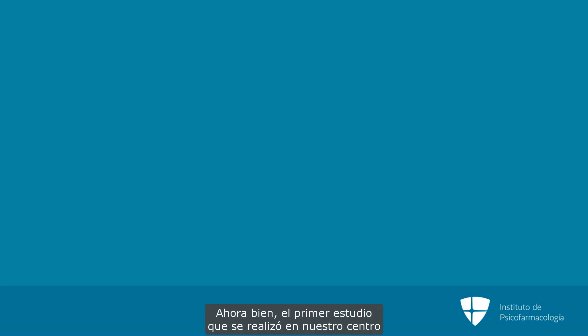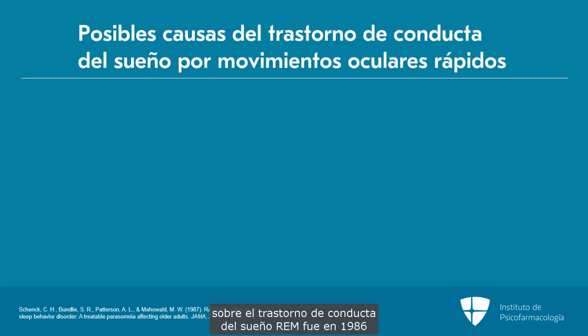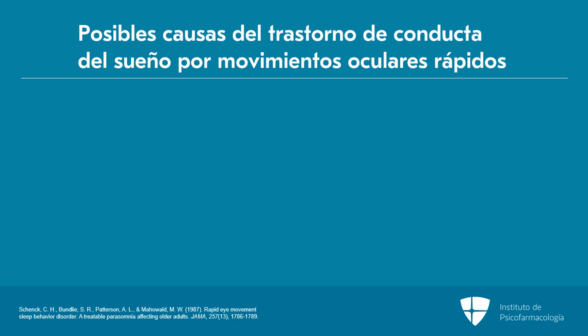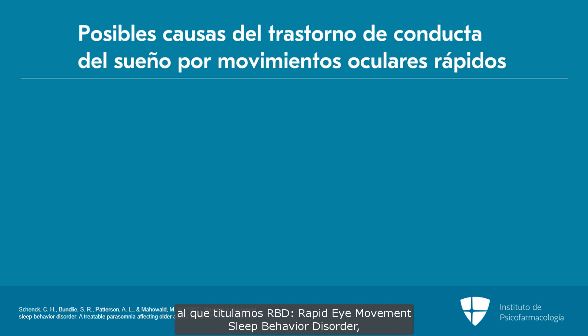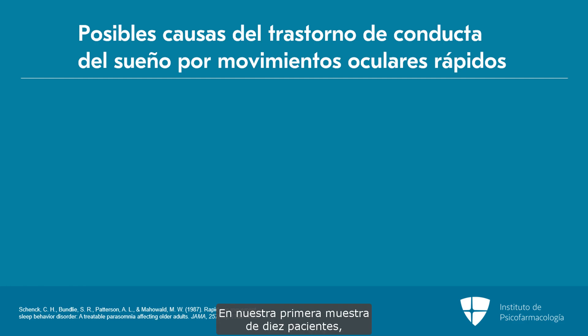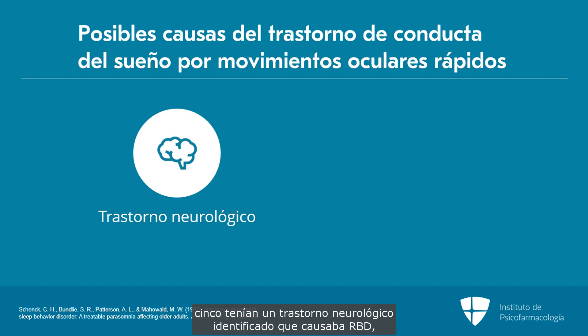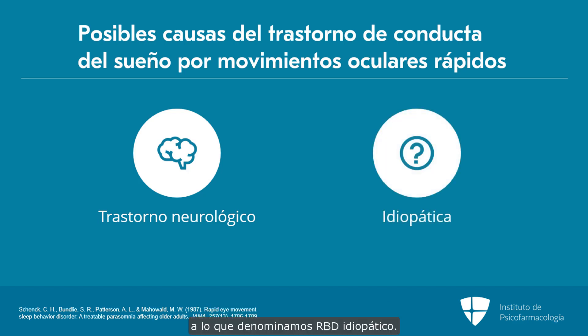The first study from our center on REM sleep behavior disorder was in 1986 on a series of five patients. We then followed up the next year in the Journal of the American Medical Association, and we named RBD in the title 'Rapid Eye Movement Sleep Behavior Disorder: a Treatable Parasomnia Affecting Older Adults.' In our first series of 10 patients, five had an identified neurological disorder that caused RBD, and five had no identified neurological disorder — we called them idiopathic RBD.